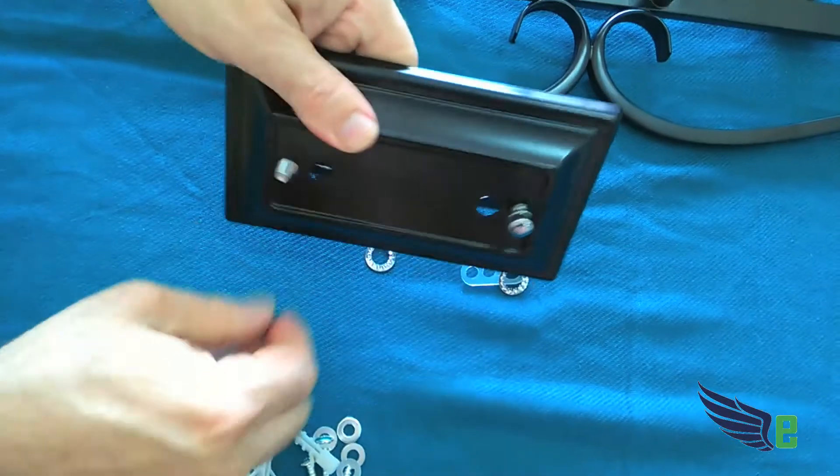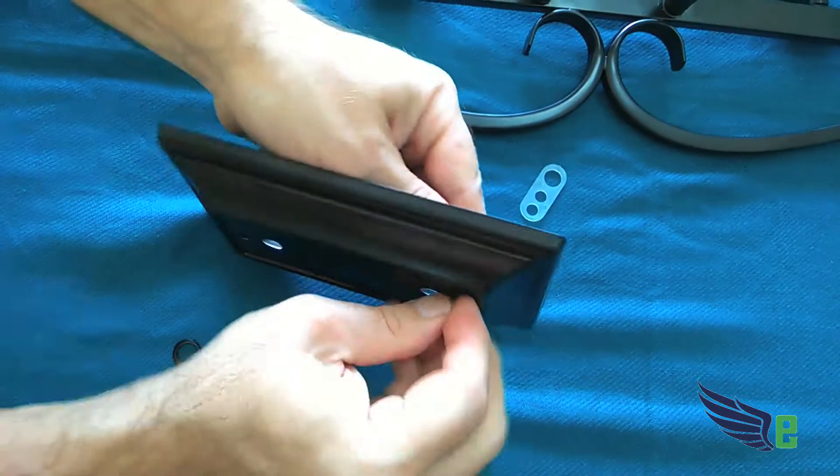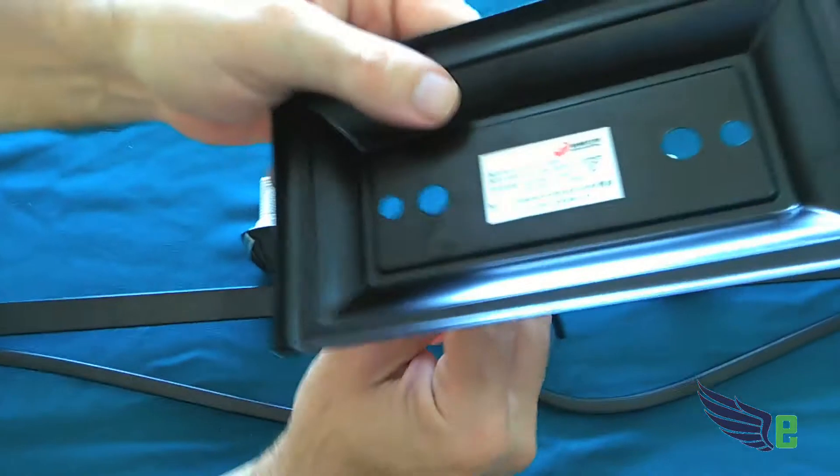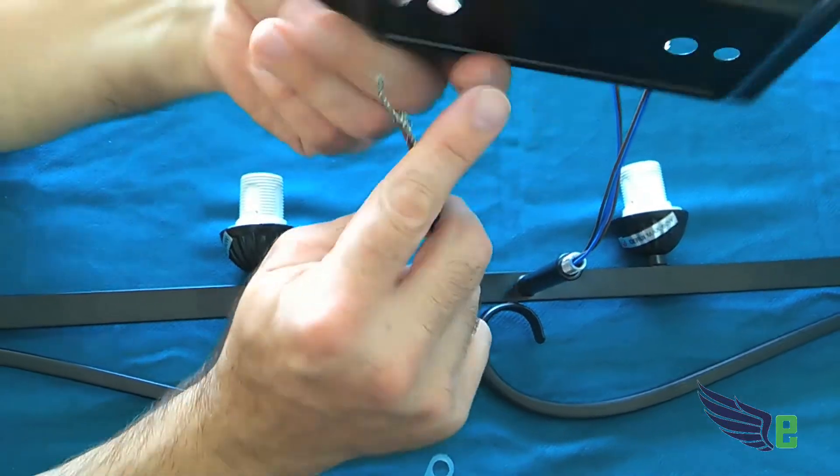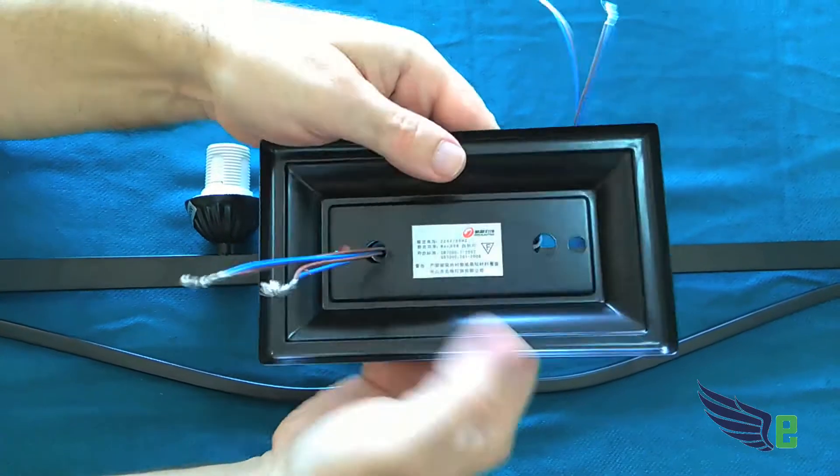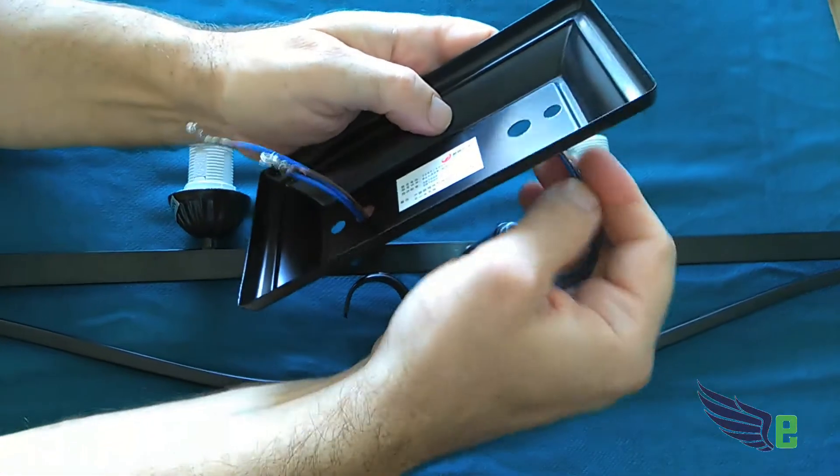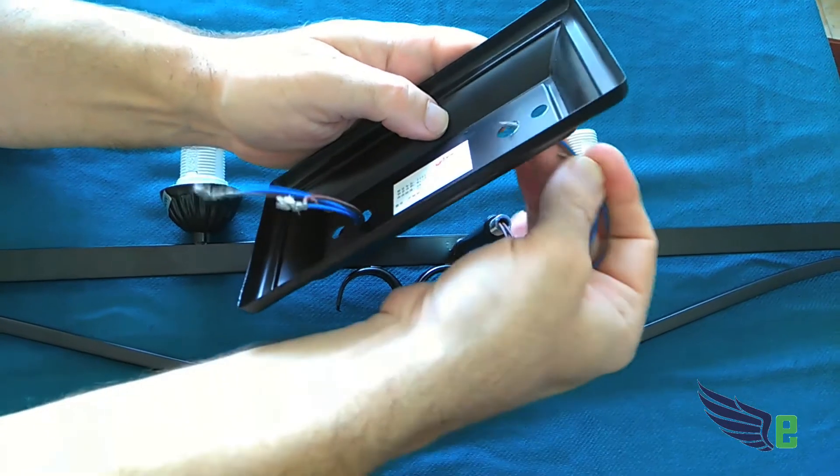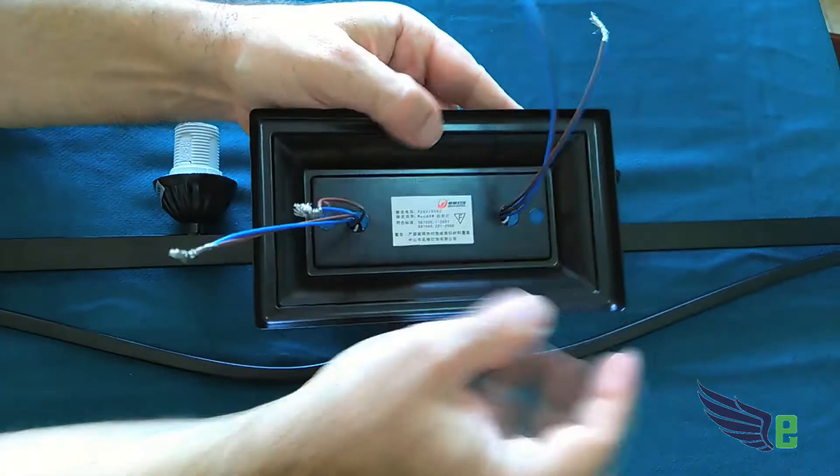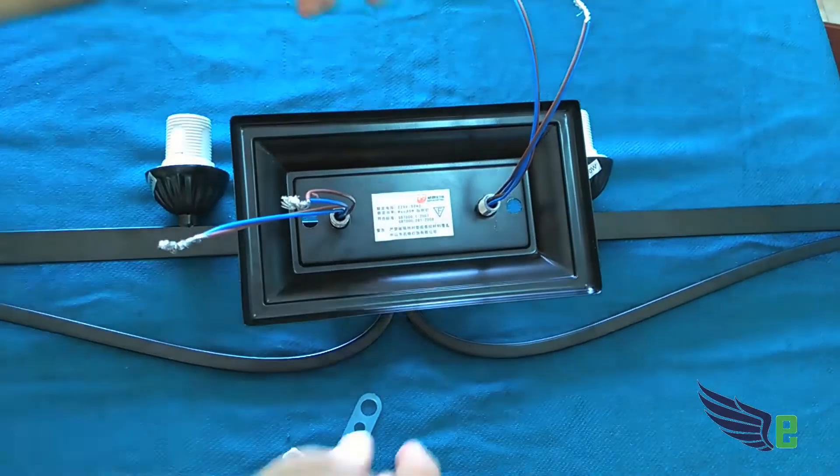Then, without the wall anchor mount on the plate, go ahead and put the plate into place. You're going to be using the inside holes. The outside holes are for the mount itself.